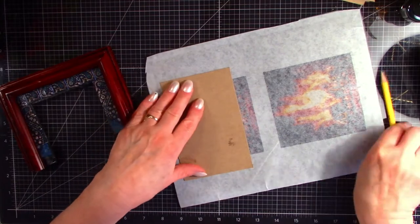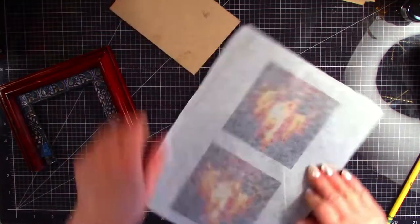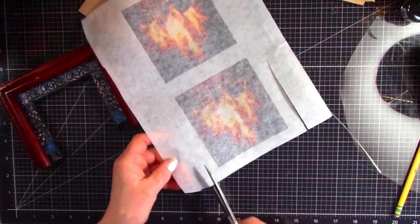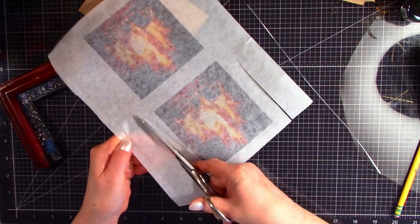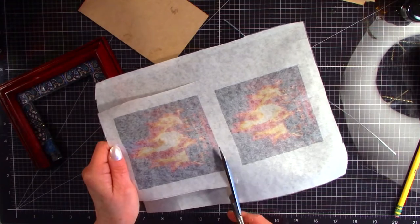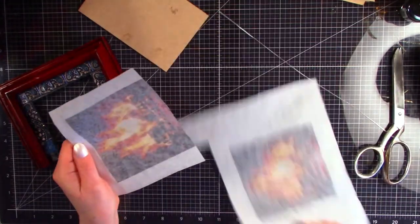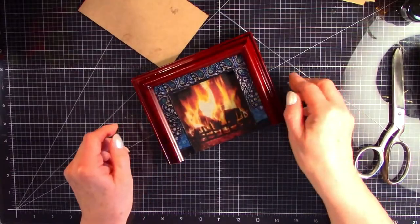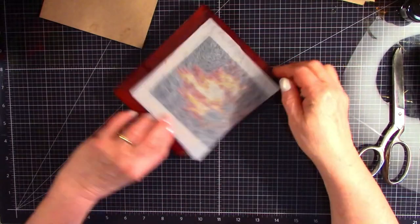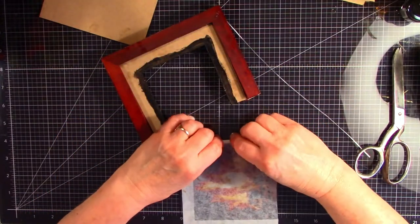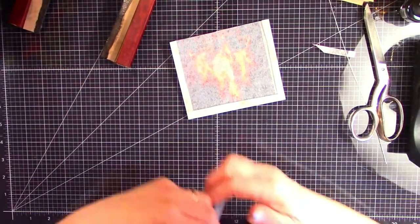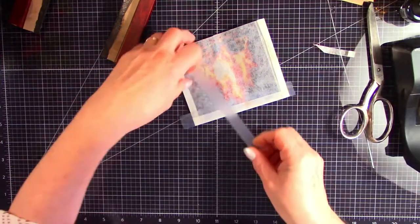This little piece of cardboard will be used on the back of the fireplace. You are going to want to cut it a little bit larger than the opening on the back of the frame.